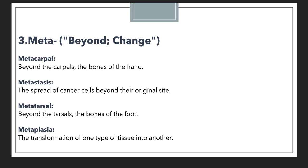Metacarpal refers to beyond the carpals, the bones of the hand. Then we have metastasis. Metastasis means the spread of cancer cells beyond their original site. If a patient is suffering from cancer and it is spreading beyond the original site, that condition is indicated with the term metastasis, which contains the prefix meta meaning beyond. Similarly, metatarsals means beyond the tarsals — the bones of the foot.